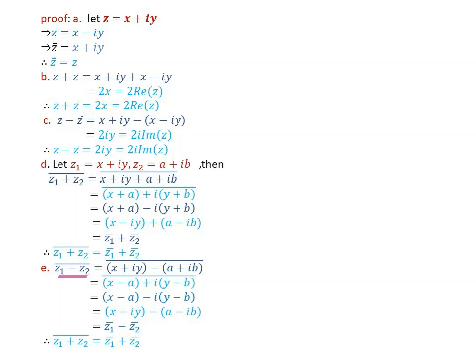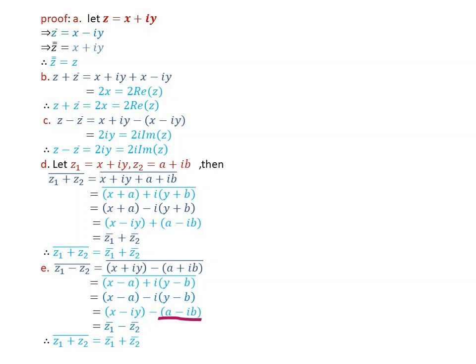Similarly, the conjugate of z1 minus z2 equals the conjugate of x plus iy minus a plus ib, which by analogous steps gives the conjugate of z1 minus the conjugate of z2.